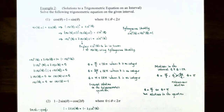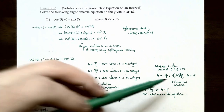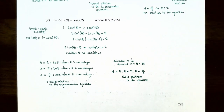The reason we got an extraneous solution is that we squared both sides of the equation, which can introduce extraneous solutions — as occurred when theta equaled three pi over two in this case.